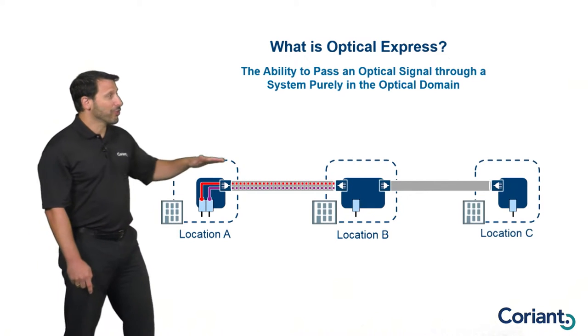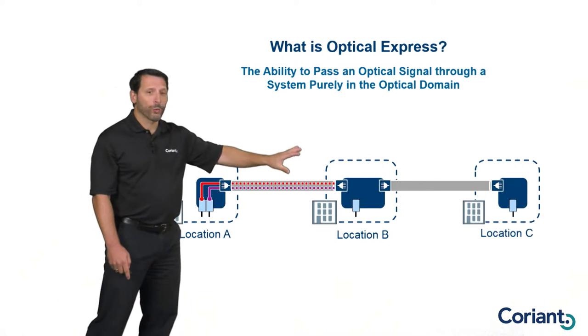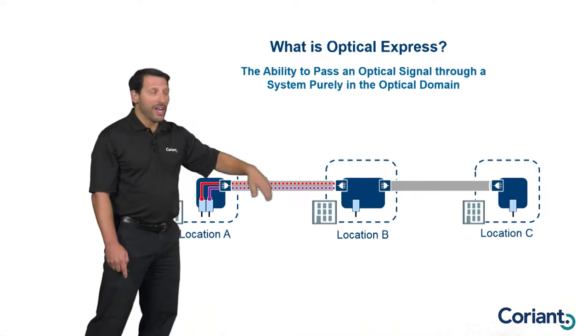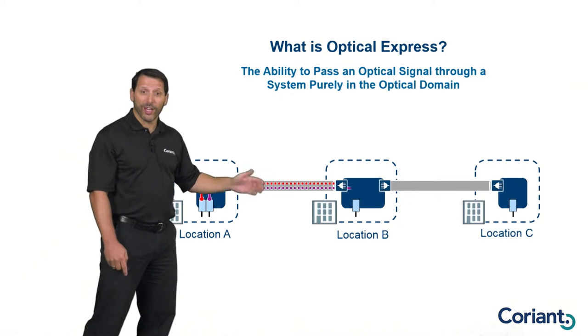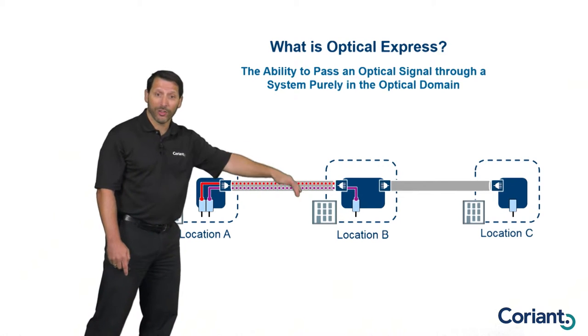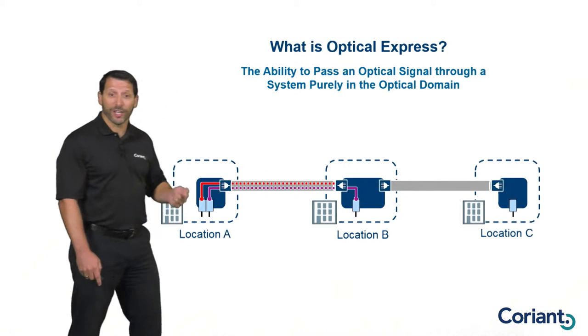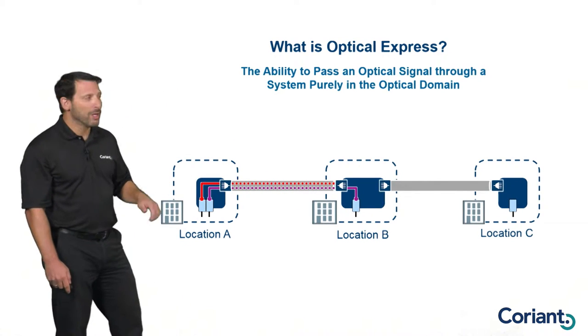I want to do this over a single pair of fibers, so I'm going to use dense wave division multiplexing to transmit those signals in multiple different colors of light, use a filter to aggregate those signals, and put them onto a single fiber. As those signals traverse the network, they're going to arrive at location B, and the signals I want to terminate at location B, I will terminate those directly to an interface module at that location.